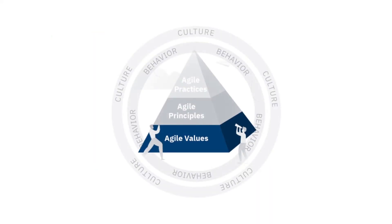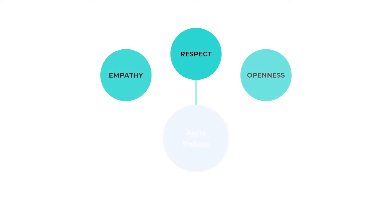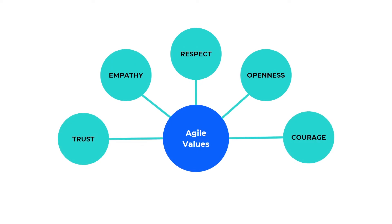If you value something, you believe it to have worth and importance. Values are about believing and living by it every day. Agile values guide how teams relate to one another. The five IBM Agile values are trust, empathy, respect, openness and courage.